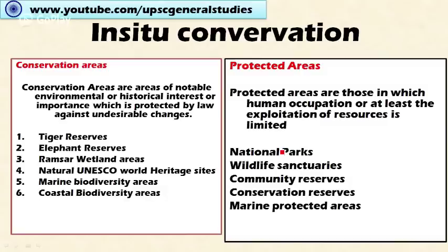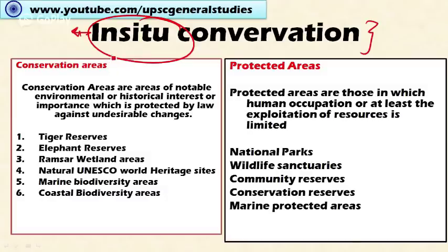Next is in-situ conservation. Here the conservation is made within the natural habitat of the plants and animal species — the conservation is carried out in their natural habitat itself. We can divide in-situ conservation into two components: conservation areas and protected areas.